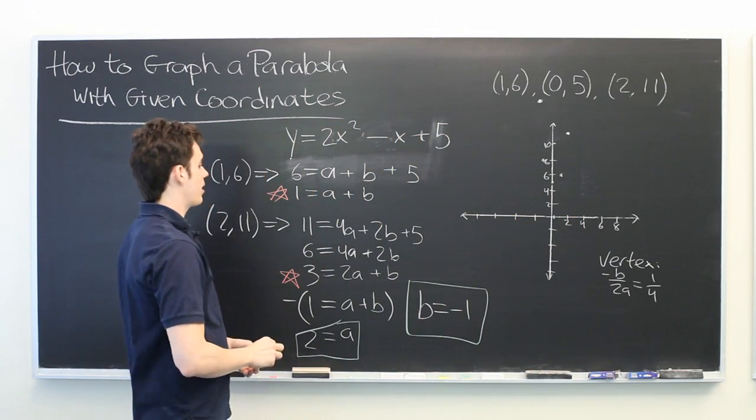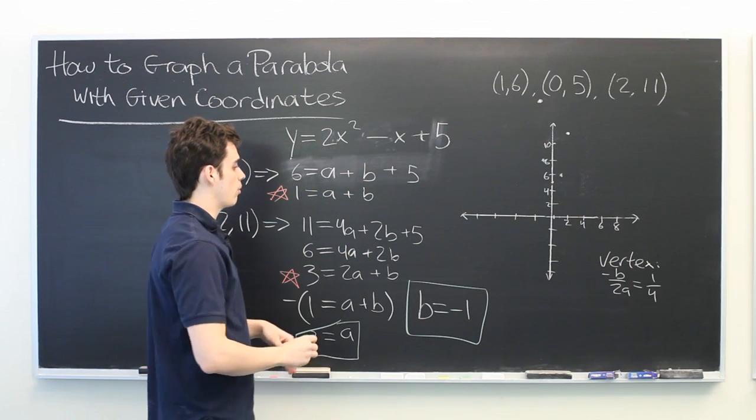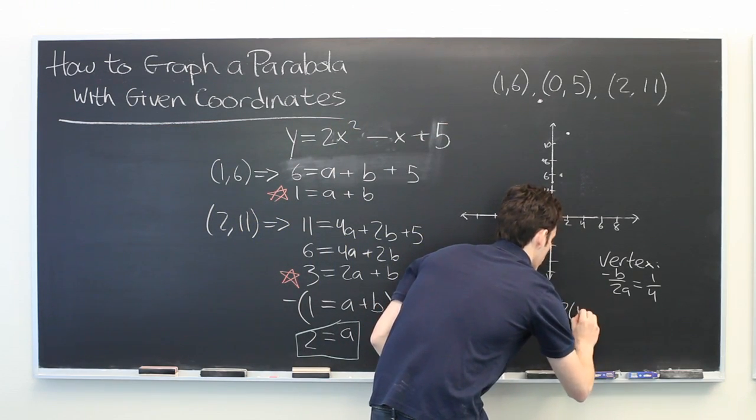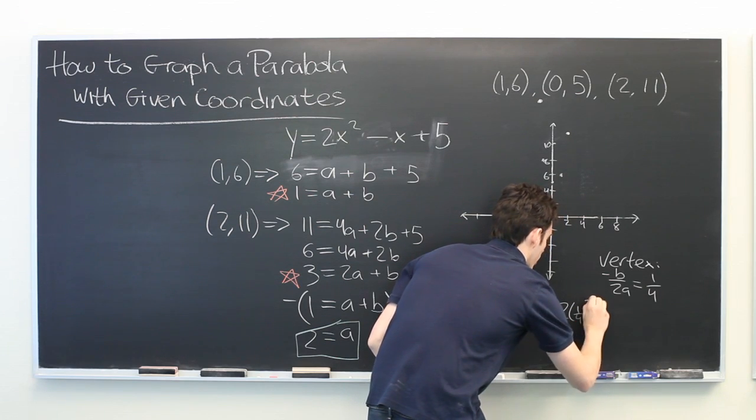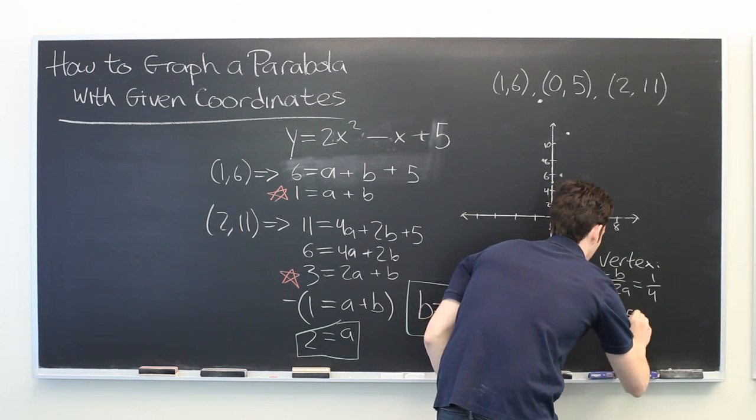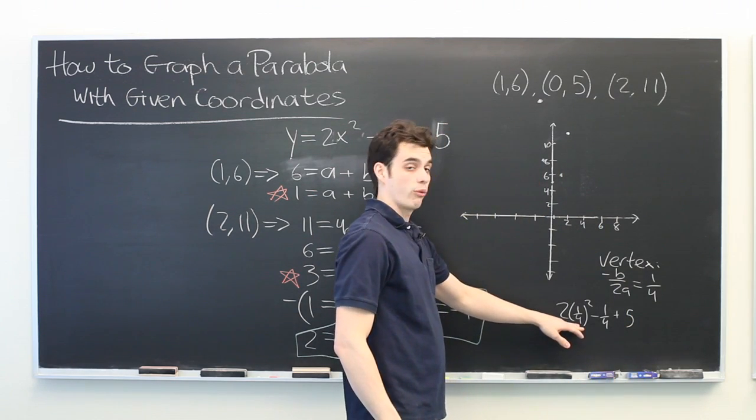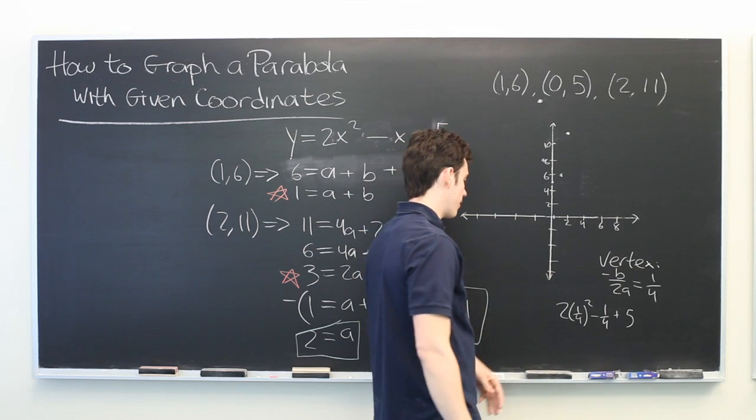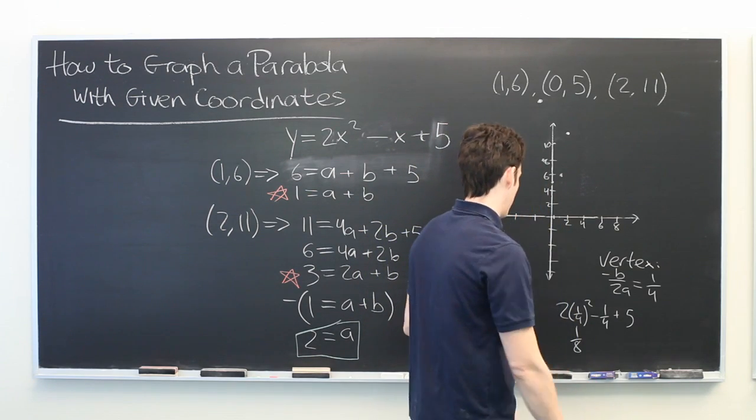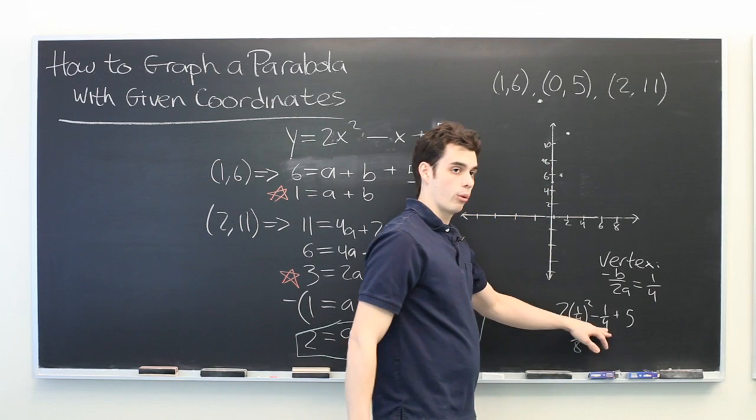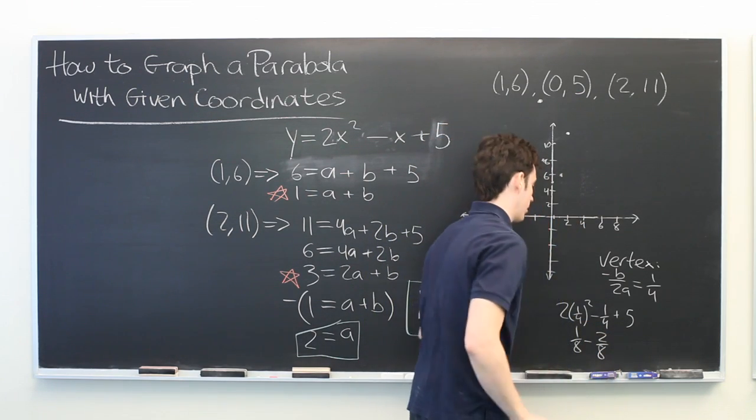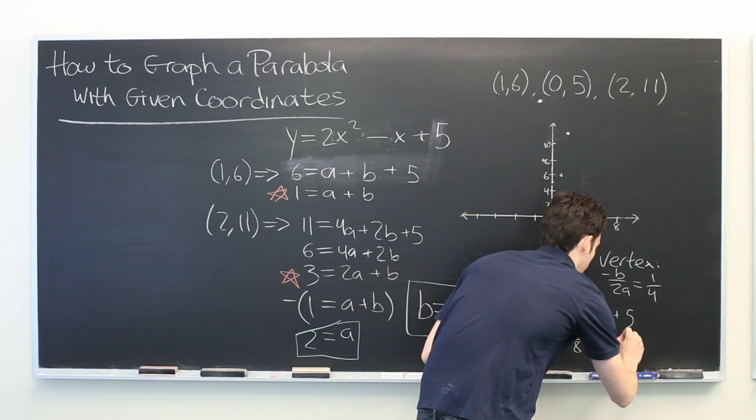And if we plug that back into here, we'll see what the y-coordinate is. 2 times 1/4 squared minus 1/4 plus 5. 1/4 squared is 1/16 times 2 is 1/8. We'll rewrite 1/4 to get a common denominator.